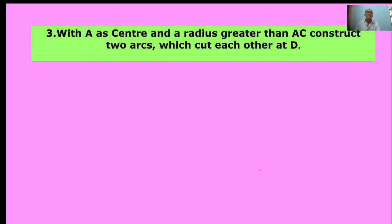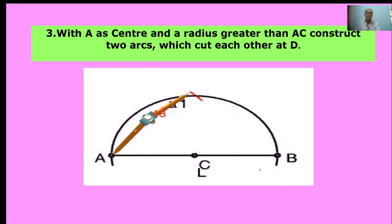With A as center and radius greater than AC, construct two arcs which cut each other at D. Here, A is the center. Take more than AC length as radius and draw an arc. This is the arc. This is called A1.